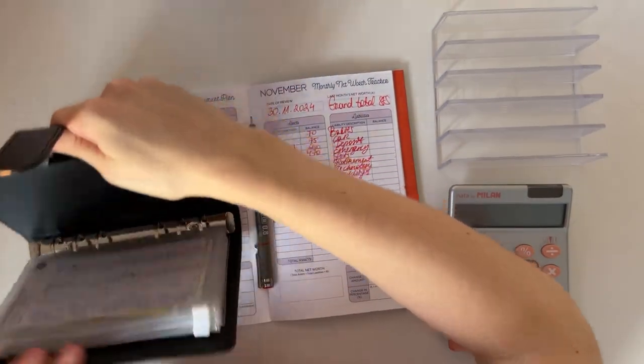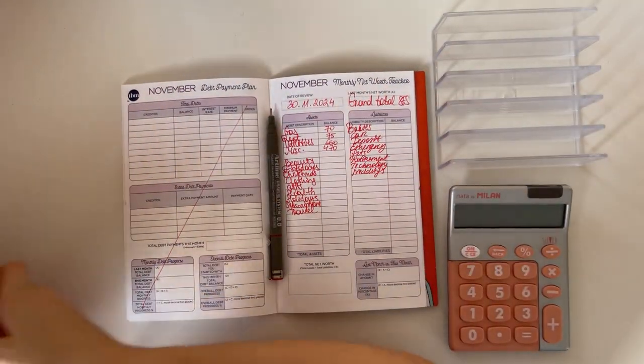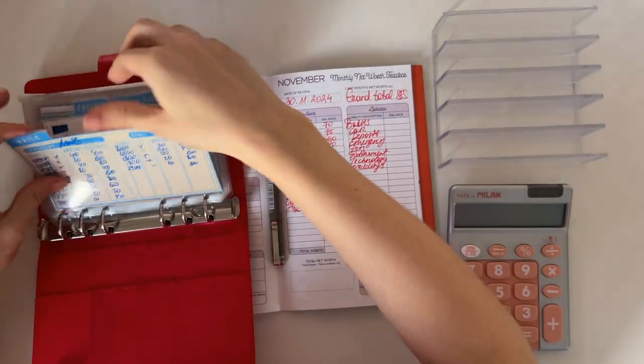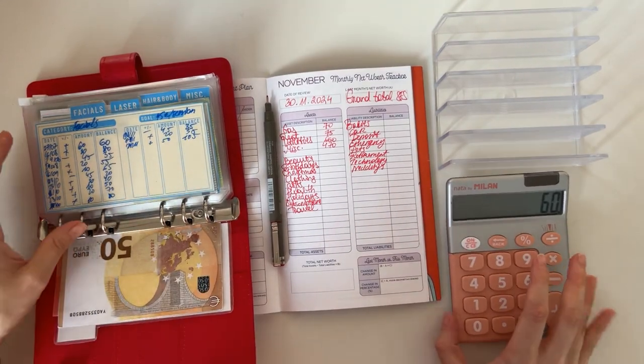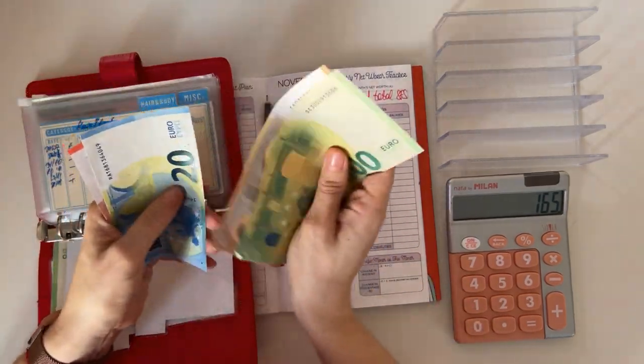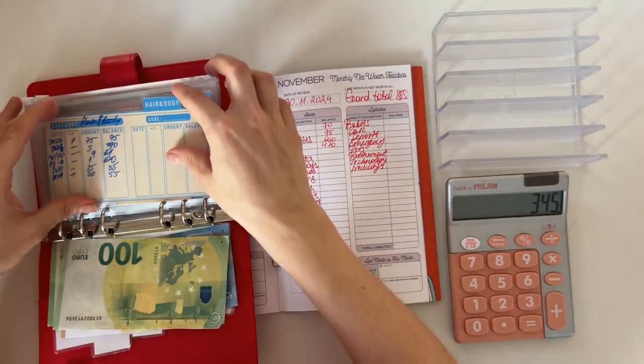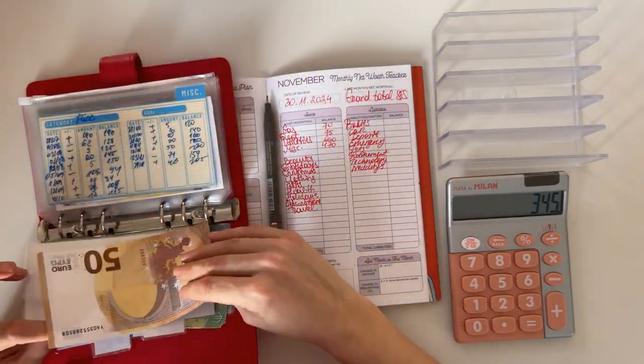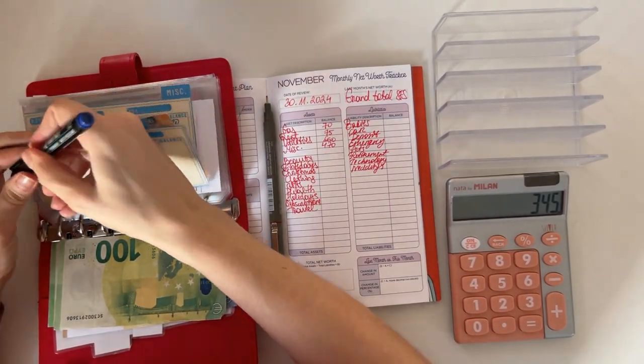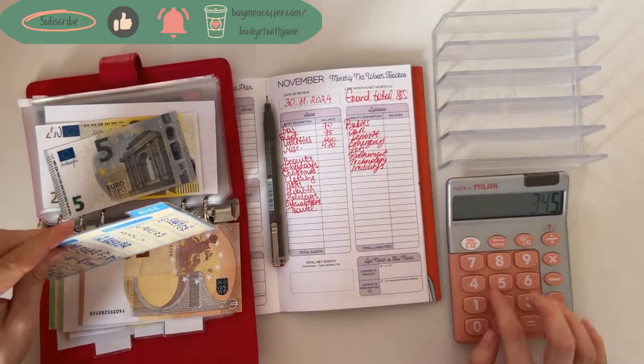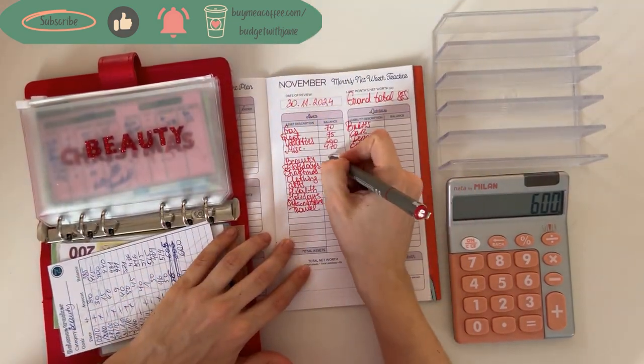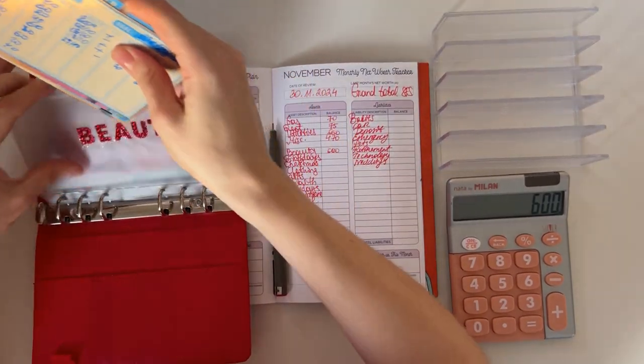Perfect, that's one binder down. We are going to short-term sinking funds next. Beauty: nails has 60, facials have 105, laser has 180, hair and body has 50, and miscellaneous has 205. That's 600 in total in beauty. This is also a good way to check if all of my trackers are up to date.